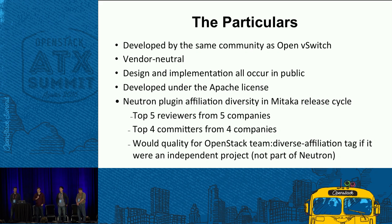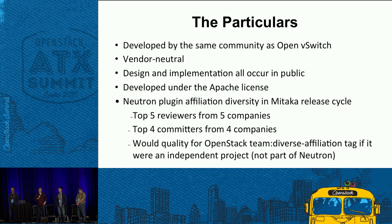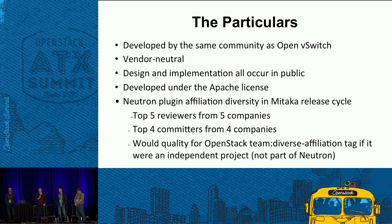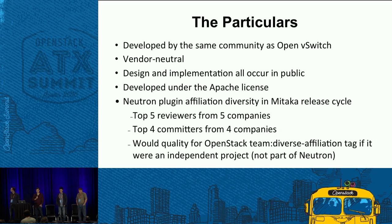OVN is being developed by the same community as Open vSwitch, in the same way — all development happening out in the open on the OVS mailing lists, where anyone can jump in and see design decisions being discussed. It's vendor-neutral: it started with a small number of vendors and has grown as eBay, IBM, and Red Hat joined in. It's under an Apache license, and for the Mitaka release, the top five Neutron plugin reviewers are from five companies and the four committers are from four different companies.